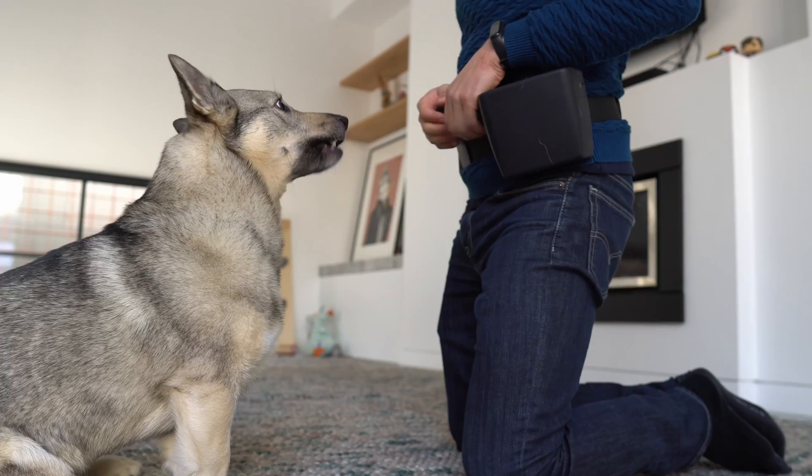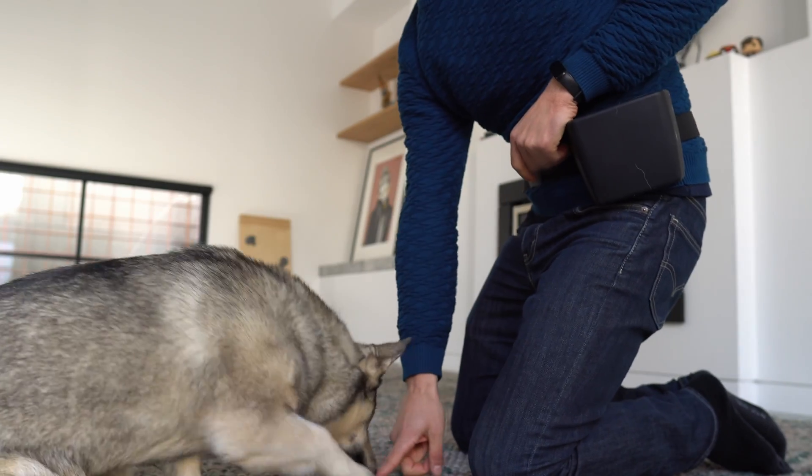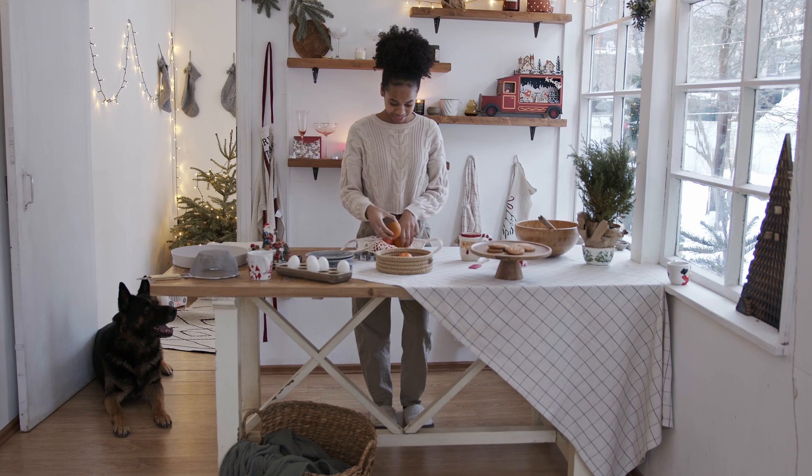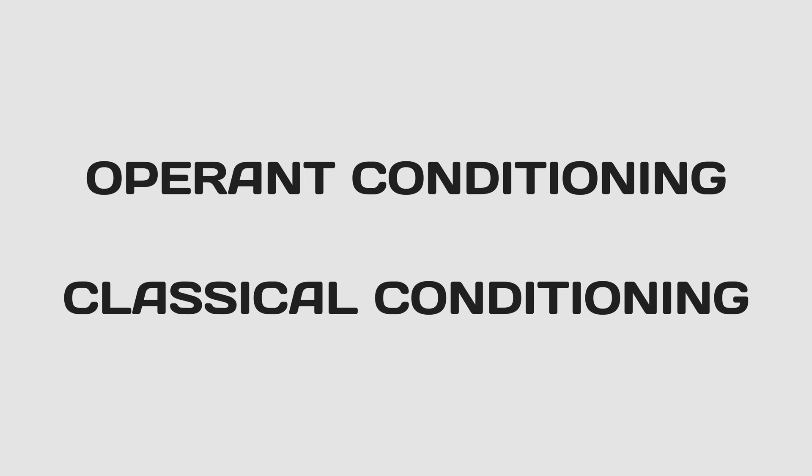You ask a dog to lie down and the dog instantly lies down. Your dog watches you prepare a meal and starts salivating. Operant and classical conditioning — can you tell the difference? Knowing how to apply these concepts to your dog training can help you become a more effective trainer, and that's exactly what we're here to do.